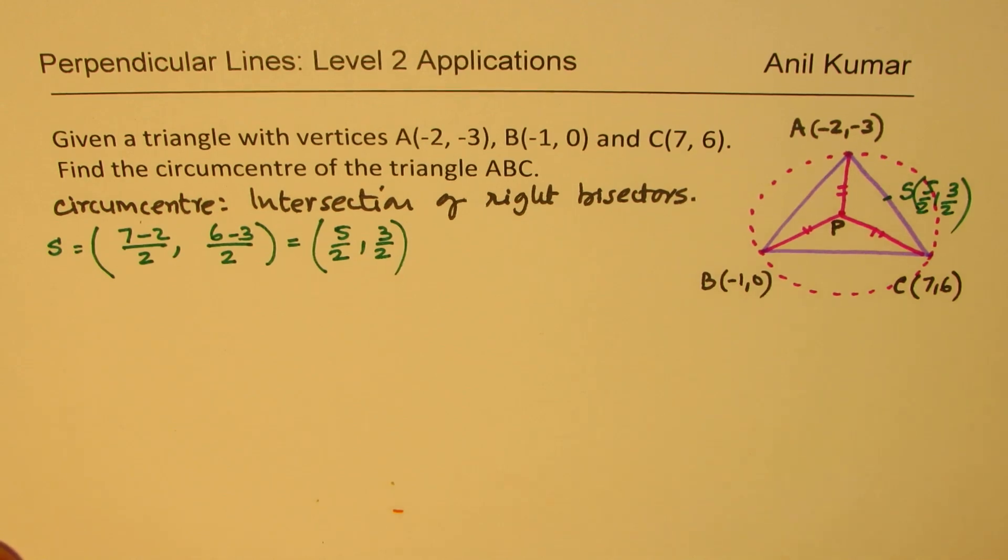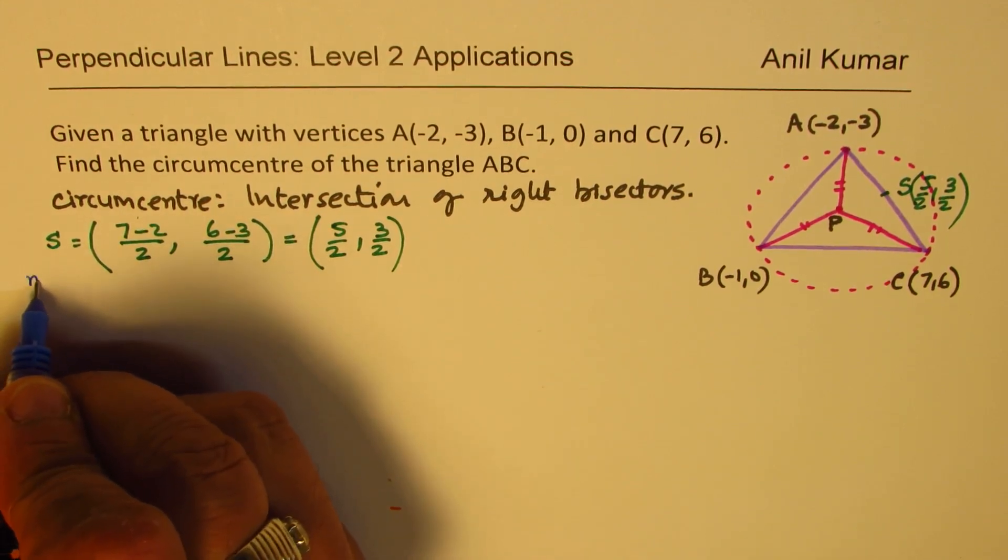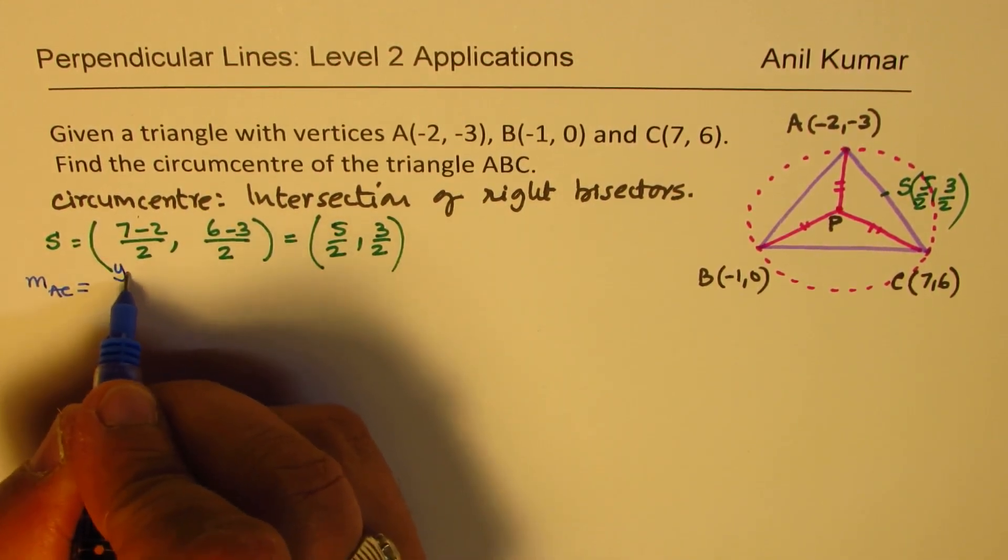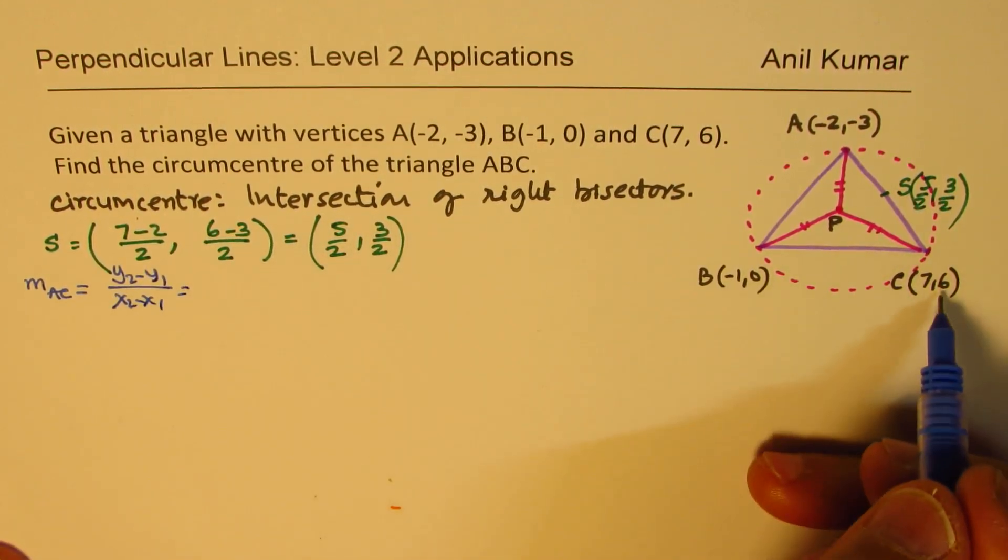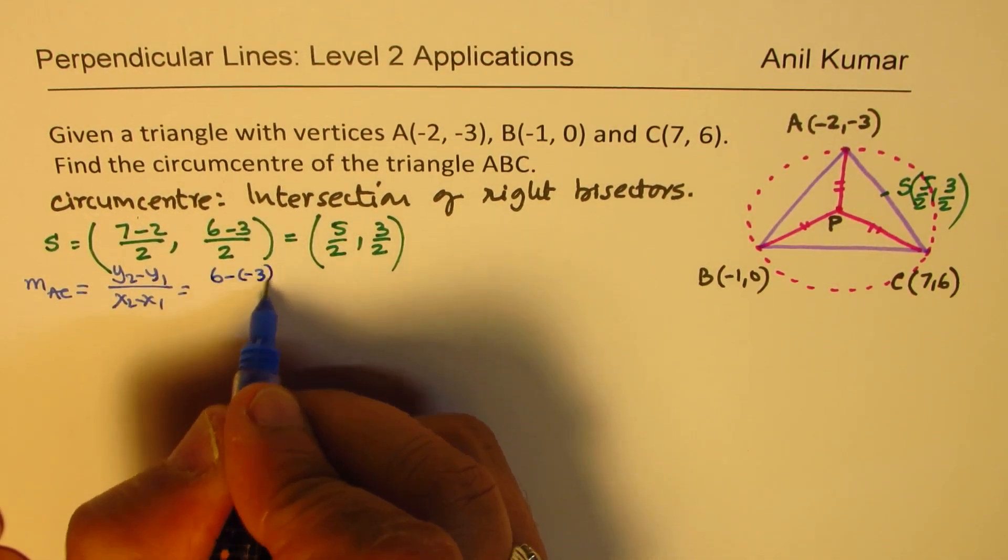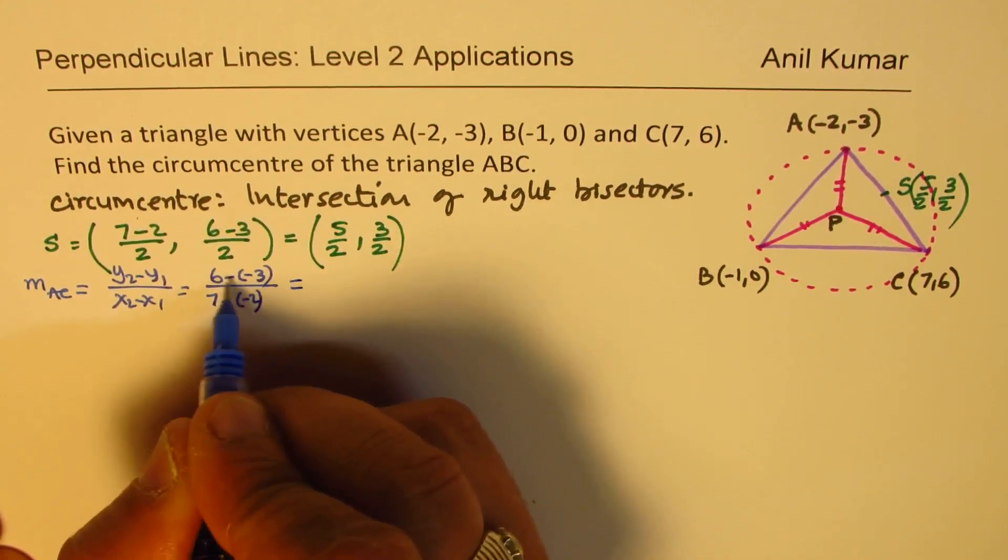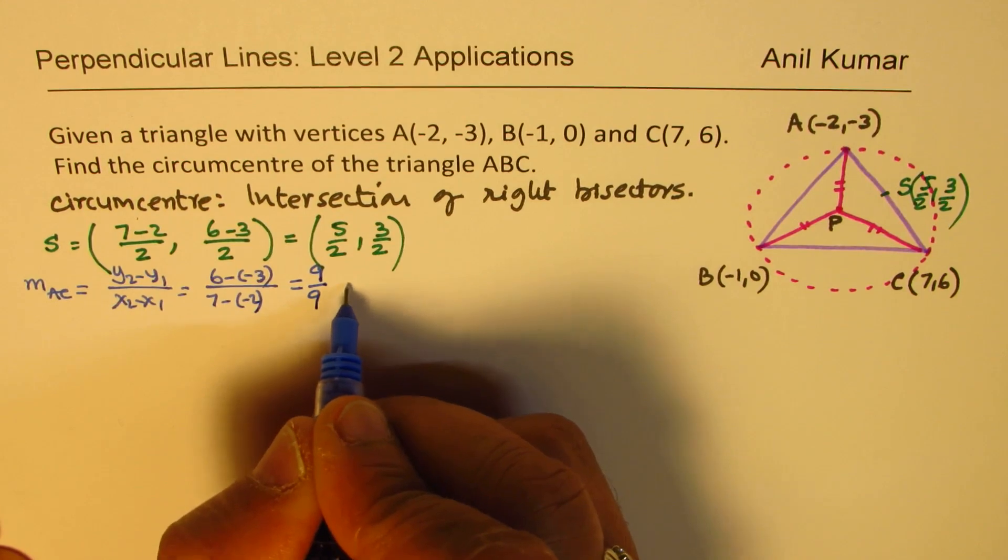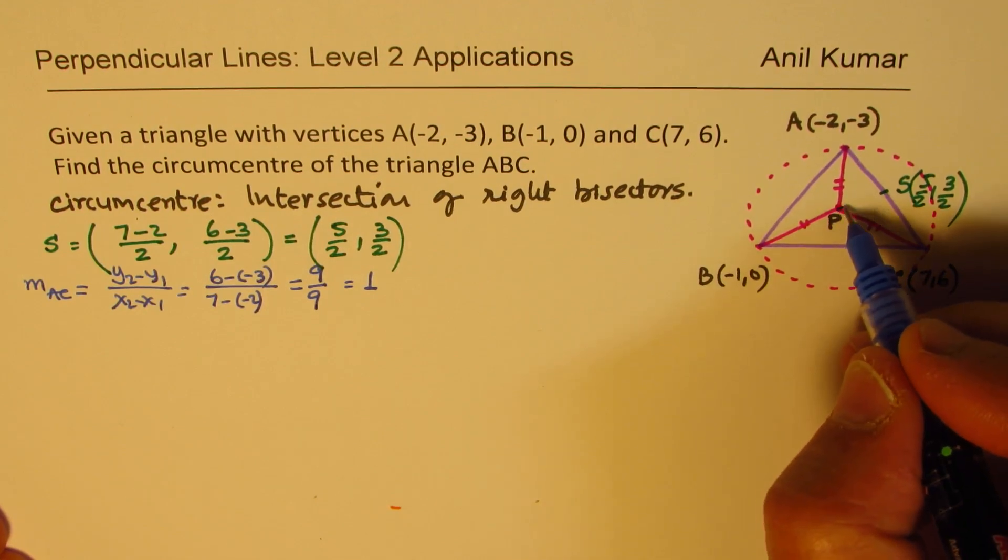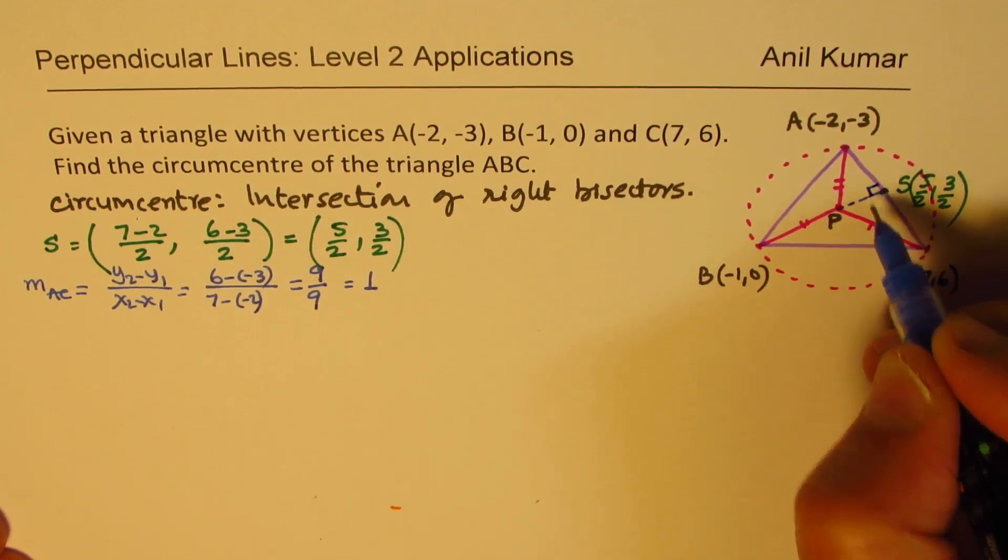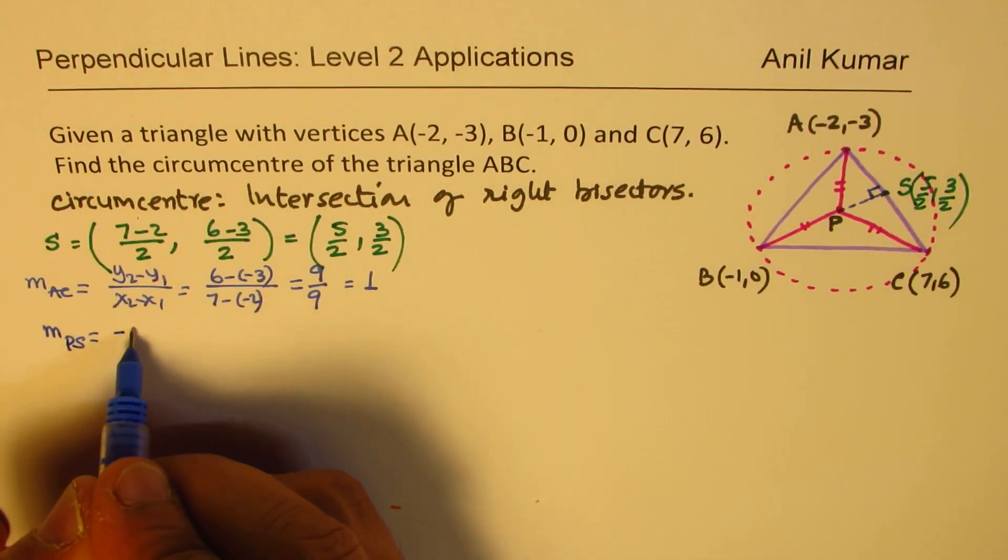Now, the next step here is to find slope of line AC. Slope is (y2 - y1)/(x2 - x1). (6 - (-3))/(7 - (-2)). So that gives you 9/9, which is 1. So that is the slope. Now, right bisector means this line will be at right angles, so the slope of PS is negative reciprocal, has to be -1.